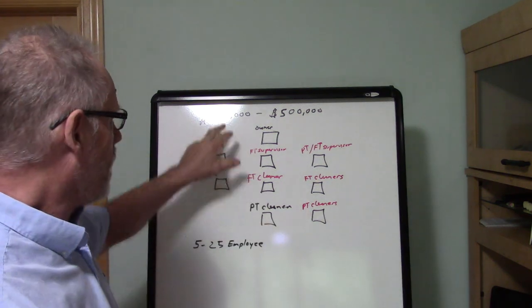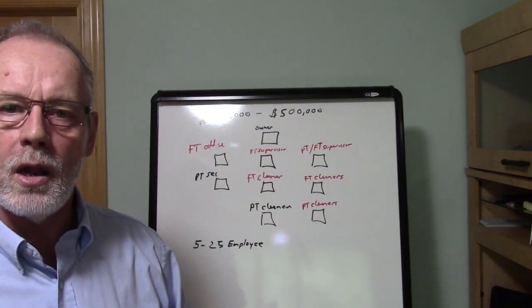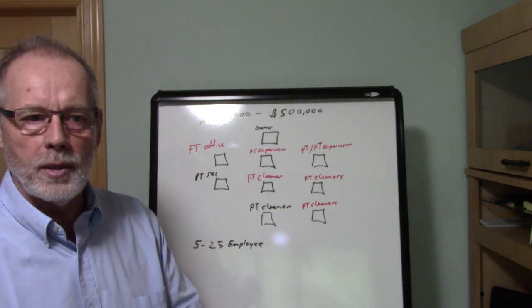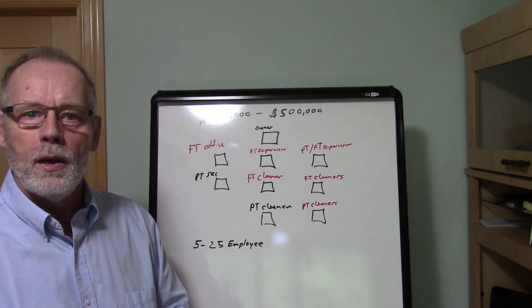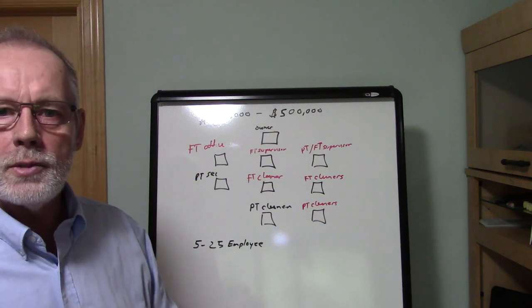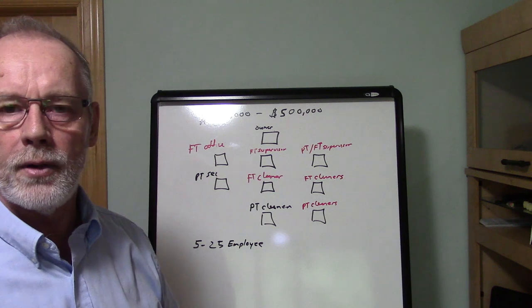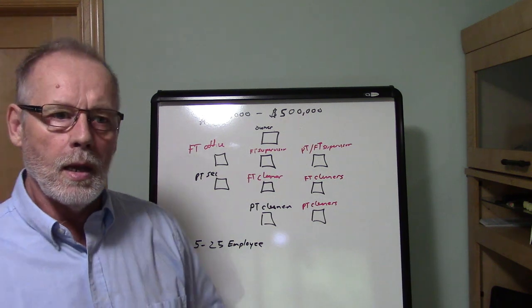We already know too that based off of how we got to our $250,000 mark, we've got X amount of accounts and they're averaging so many dollars per month. Well, by doing that and using that calculation, you're going to know how many accounts you're going to need to get to $500,000.